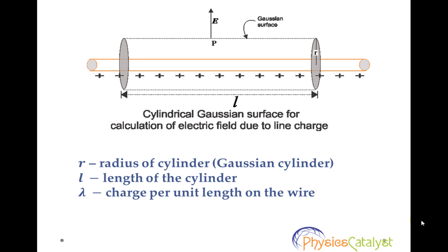We will now try to find electric field at a point P which is at a distance R from the uniformly charged wire. So we can assume Gaussian surface to be a right circular cylinder of radius R and length L with its ends perpendicular to the wire as shown in this figure.